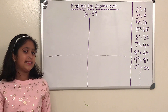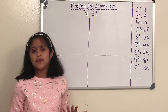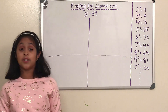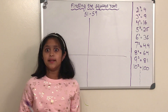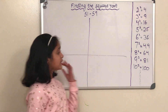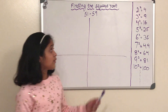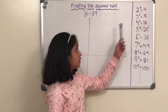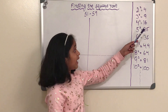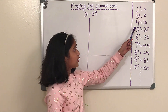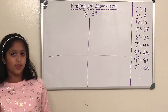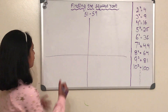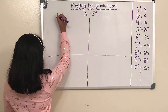So how about we take a step back here? What's a square root? Well, a square root means that you're multiplying a number by the same number. I have listed some examples here. For example, 2 squared is 2 times 2, which equals 4; 3 squared equals 9; 4 squared equals 16, and so on. So how about our first one: 56 squared?